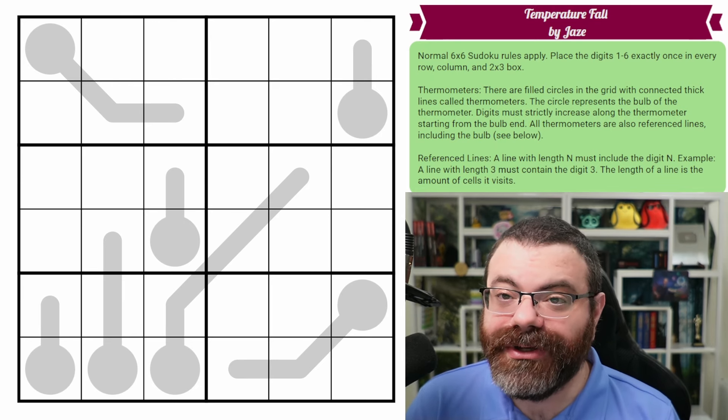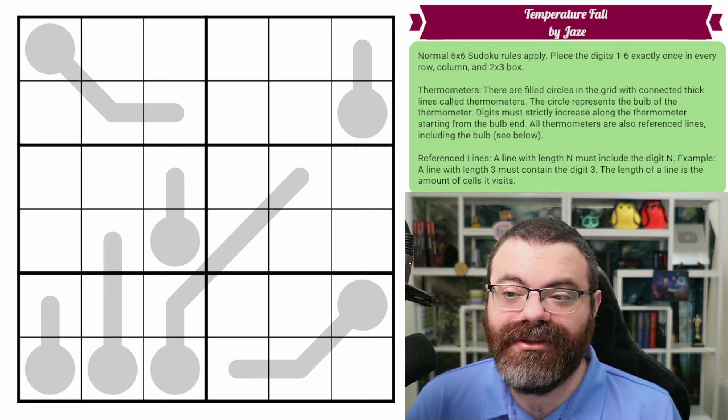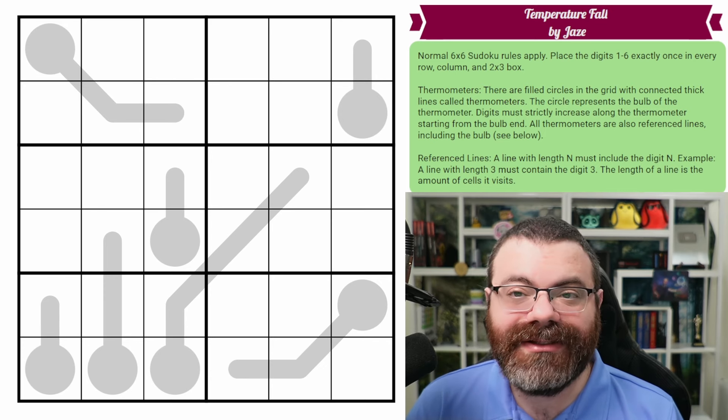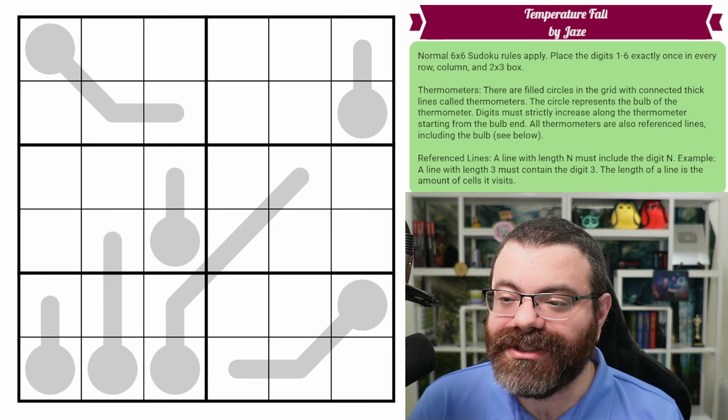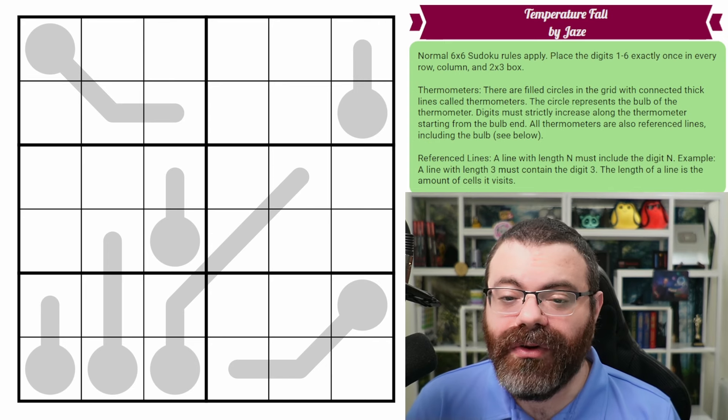Each puzzle has the thermometer constraint along with another constraint. In this case, the thermometers are also referenced lines. So if you know what that means, you can go ahead and start solving. If not, I'm going to go over the rules now.